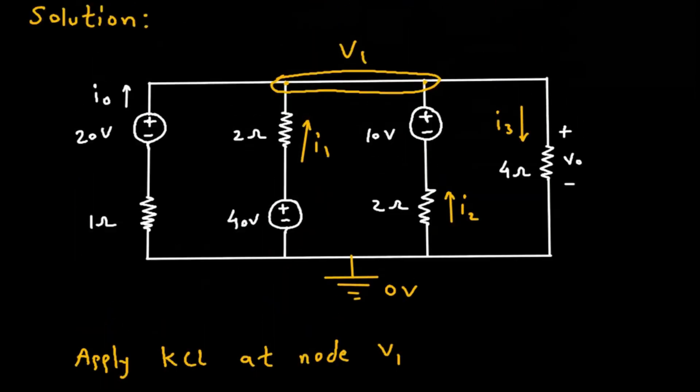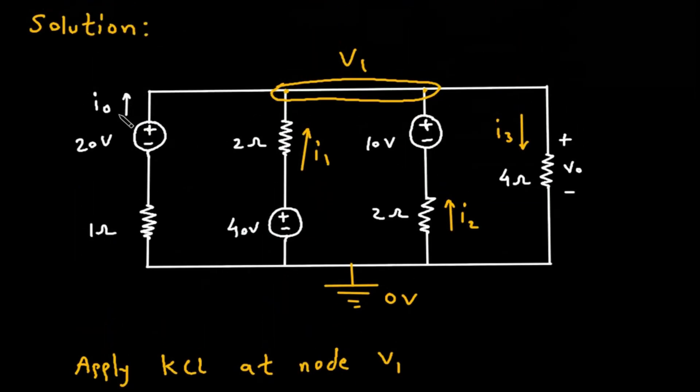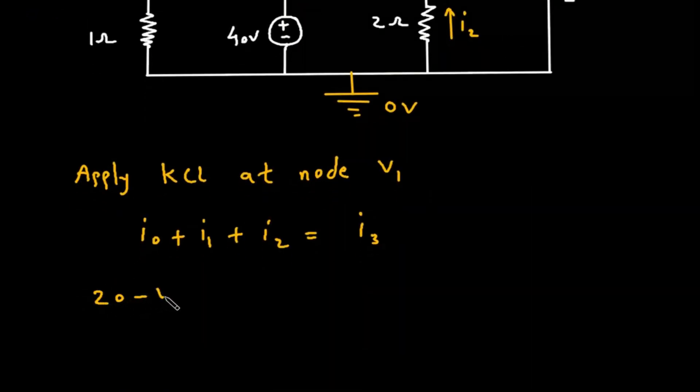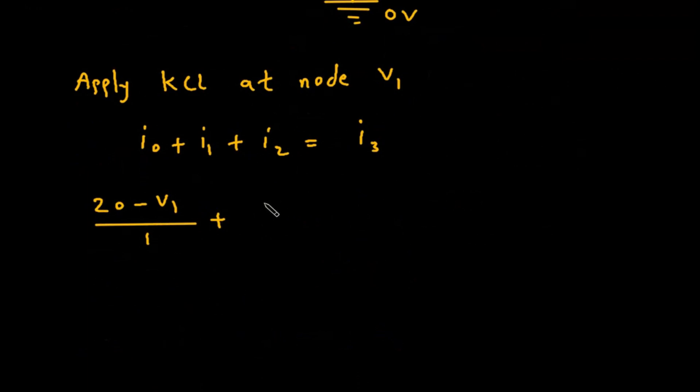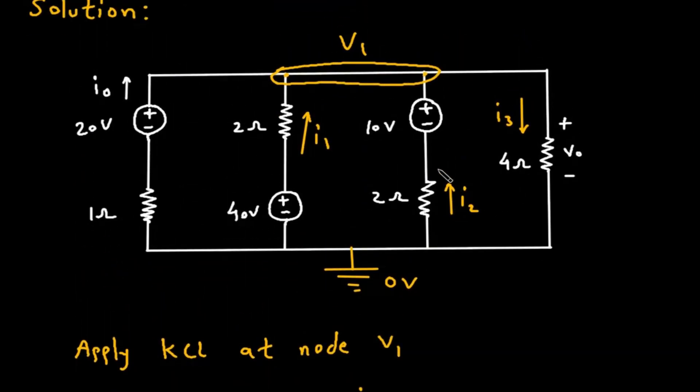Now, I₀ equals (20 - V₁)/1. Plus I₁, which is (40 - V₁)/2. Plus I₂, which is (10 - V₁)/2.